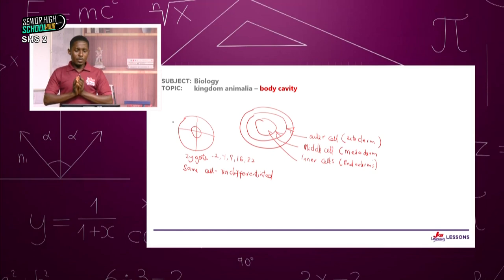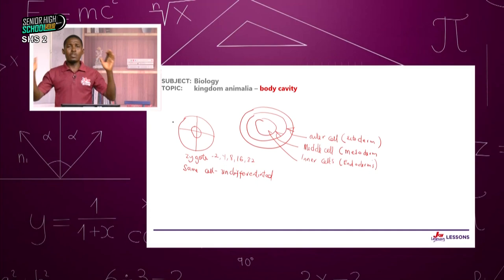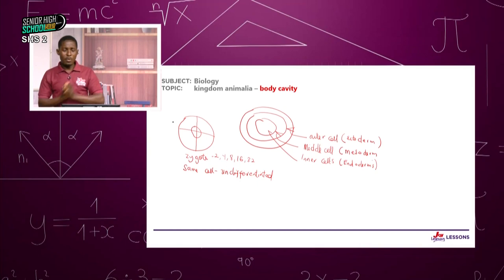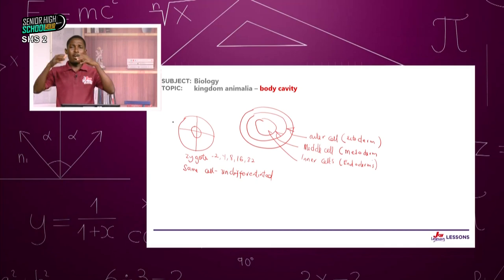The outer cells, because they are on the outside, will become your integument or skin. The cells that form your bones and inner muscles are called the mesoderm. And organs like your kidney and digestive tract will develop from the inner cells — the endoderm. Once you have all these three layers, we say you are triploblastic.